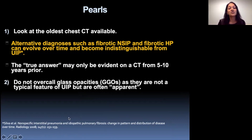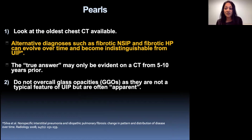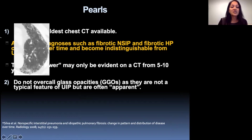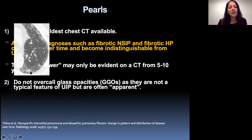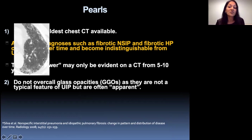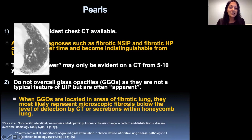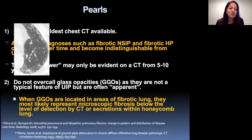The other pearl is do not over-call ground glass opacities, as they're not a typical feature of UIP but they're often apparent. What looks like ground glass opacification is only present in the area of fibrosis — if you look at the lung not involved with fibrosis, there's no evidence of ground glass opacification. When ground glass opacities are located in areas of fibrotic lung, they most likely represent microscopic fibrosis below the level of detection by CT, or secretions within honeycomb lung.